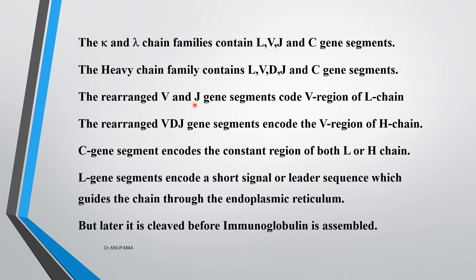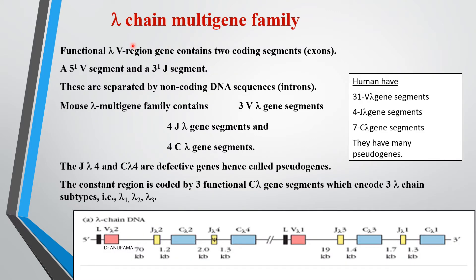The rearranged V and J gene segments code for the V region of the light chain, while rearrangements resulting in V-D-J segments encode for the variable region of the heavy chain. The C gene segments code for the constant regions of both light chain and heavy chain. The L gene segments encode for a short signal sequence - called the leader sequence - that guides these chains through the endoplasmic reticulum and is later cleaved before the immunoglobulin is assembled.